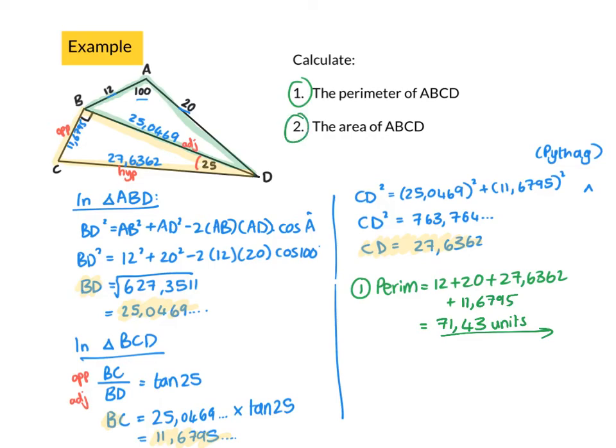Secondly, let's work out the area. I don't know the formula for the area of a quadrilateral like this, but I do know the formula for the areas of the triangles. The area is going to be equal to the area of triangle ABD plus the area of triangle BCD. ABD is not a right-angled triangle, so I'm going to have to use the sine rule: ½(12)(20)sin 100. The area of triangle BCD is a right-angled triangle, so ½ times base, 11.6795, times the height, 25.0469. I'm going to add those two together, and I get the area being 264.44 square units.